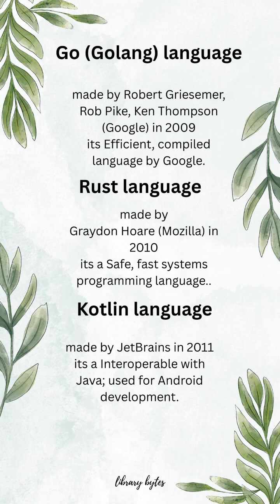Rust, made by Graydon Hoare in 2010. It's a safe, fast systems programming language. Kotlin, made by JetBrains in 2011. It's interoperable with Java and used for Android development.